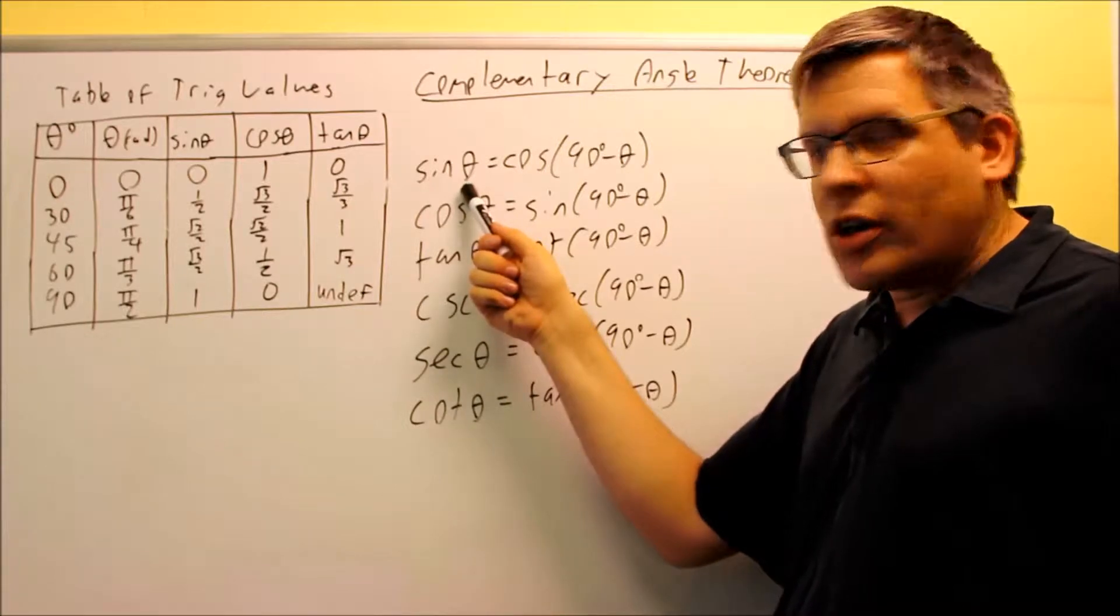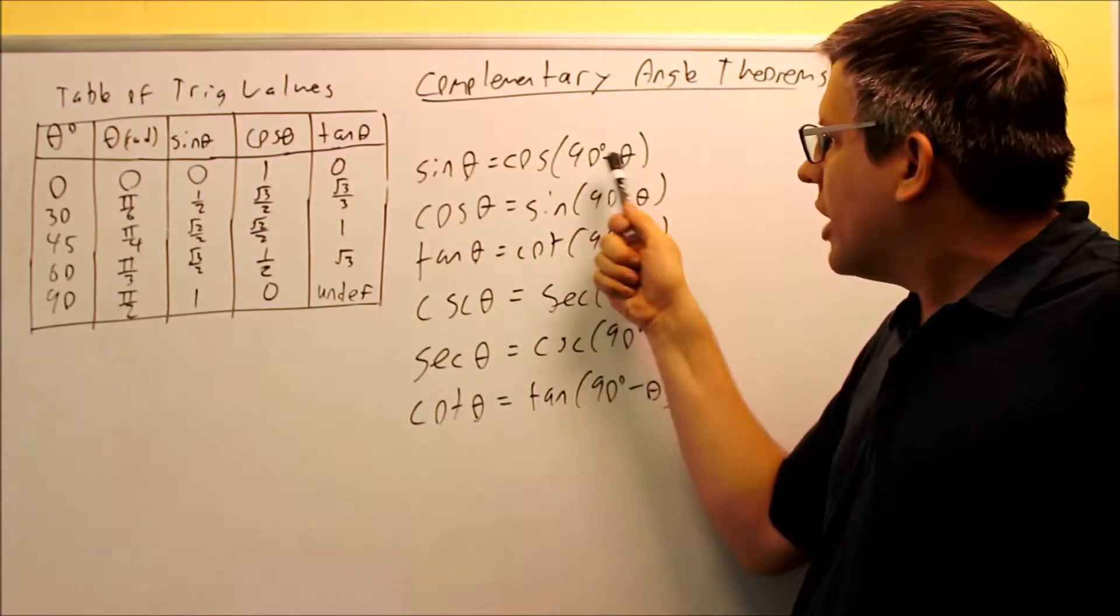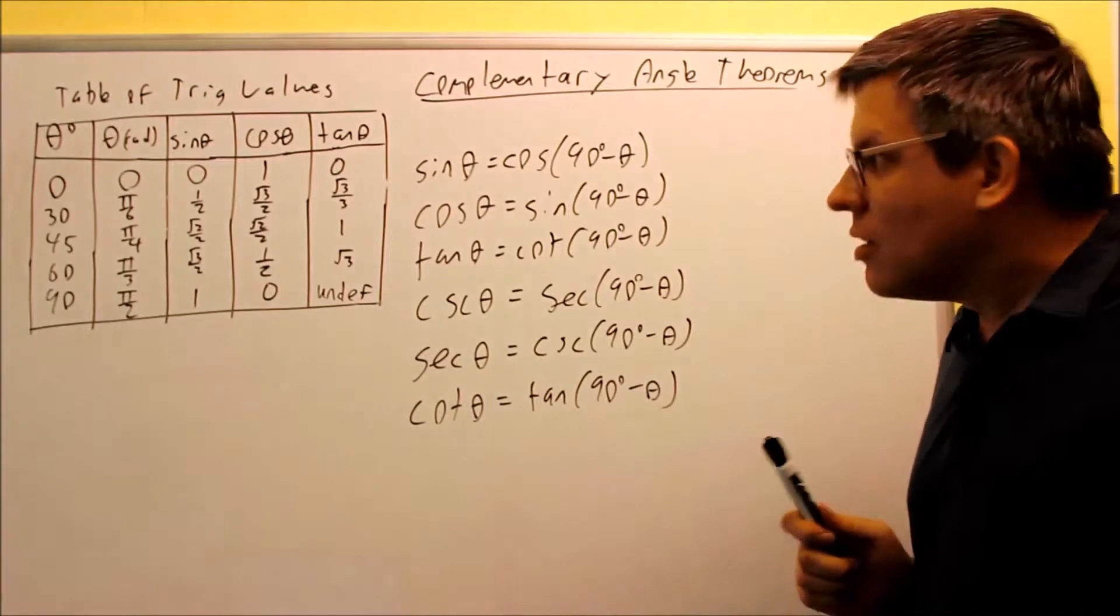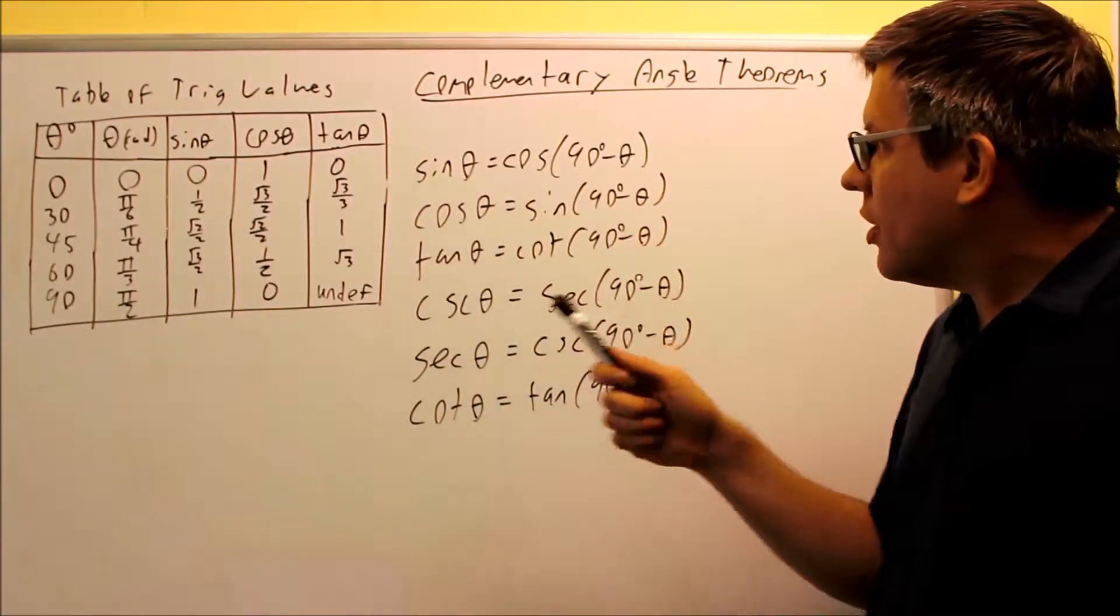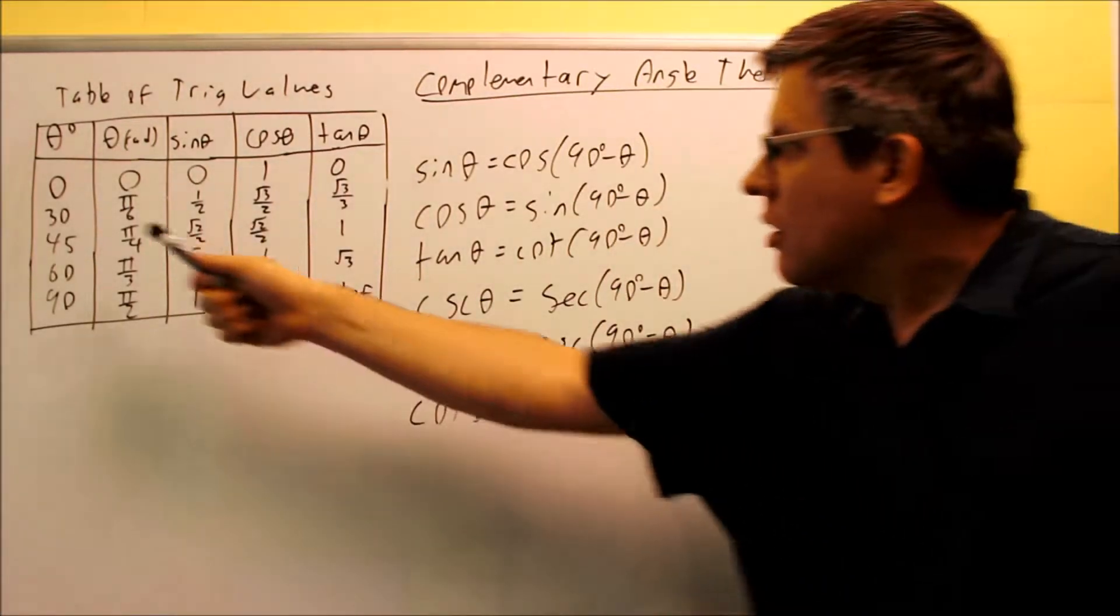So let's see if this works. If I have 30 degrees, sine of 30 degrees is one half. If I put 30 in here, that would be 90 minus 30, that would be 60. So that means that sine 30 is equal to cosine 60.